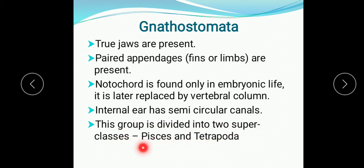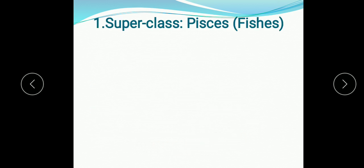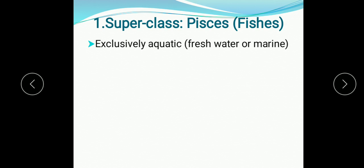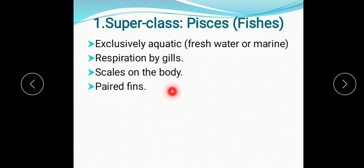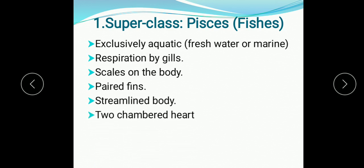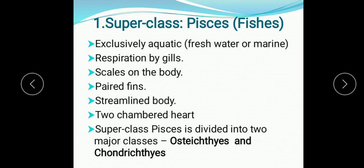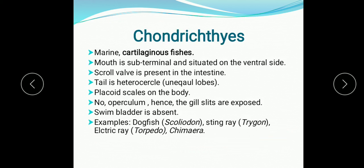Gnathostomata is further divided into two super classes: Pisces and Tetrapoda. In Pisces we study all fishes — they are exclusively aquatic, either freshwater or marine. Respiration is by gills. They have scales on the body and paired fins which help them to swim. Streamlined body — pointed at both ends — helps them to penetrate and swim in water. Two-chambered heart: one auricle and one ventricle; only venous blood passes through the heart. Pisces is divided into Osteichthyes and Chondrichthyes.